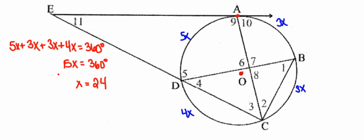Now I can find the degree measures of the arcs. Arc DA is 5 × 24 = 120 degrees. Arc AB is 3 × 24 = 72 degrees. Arc BC is also 3 × 24 = 72 degrees. Arc CD is 4 × 24 = 96 degrees. A quick check: 120 + 72 + 72 + 96 = 360. It does, so I've found those arcs correctly.